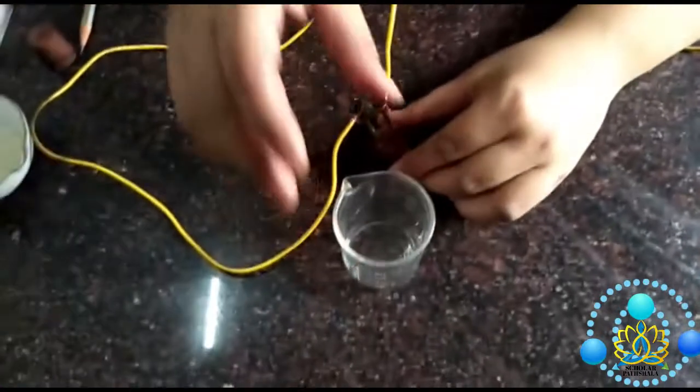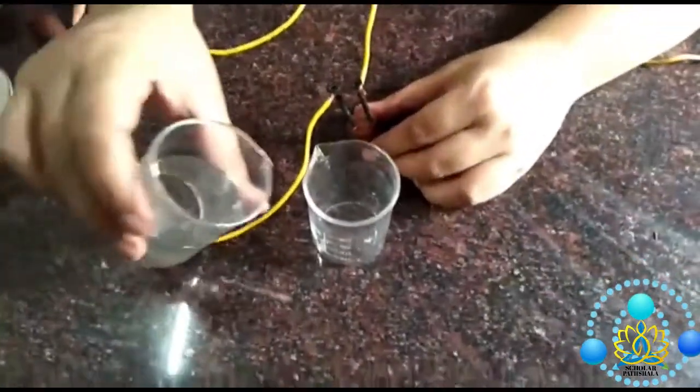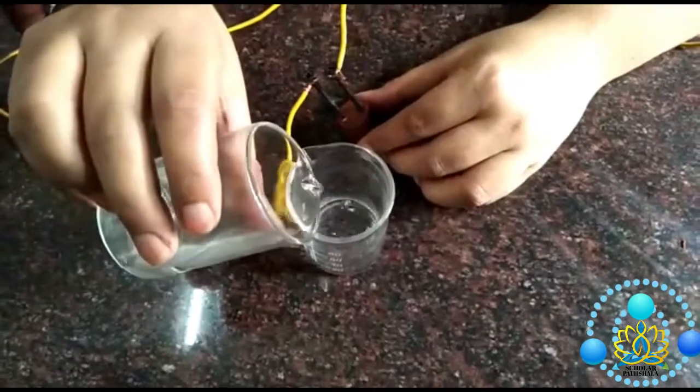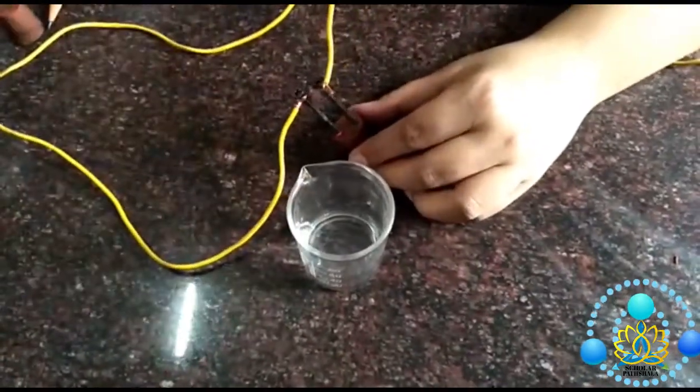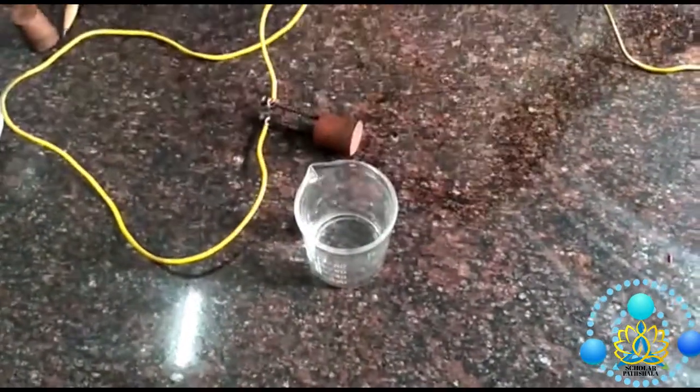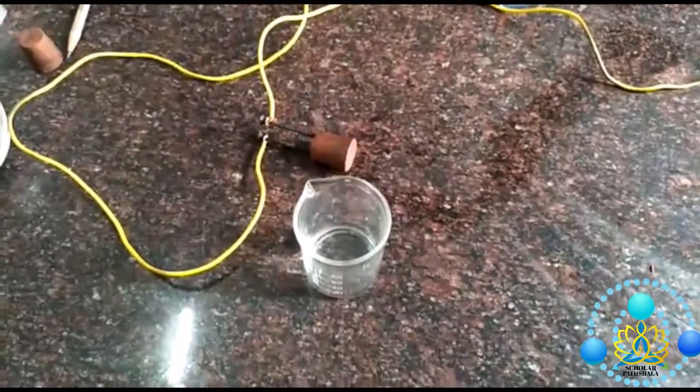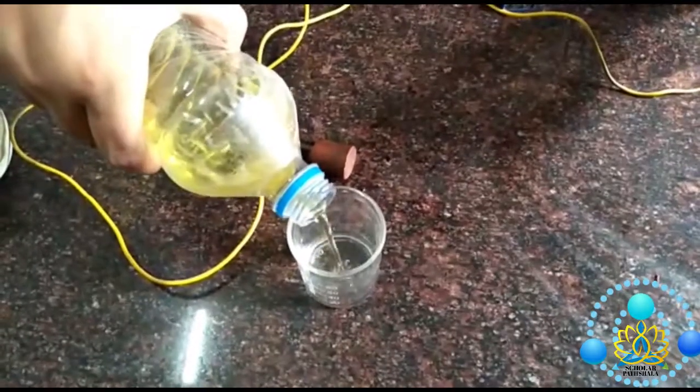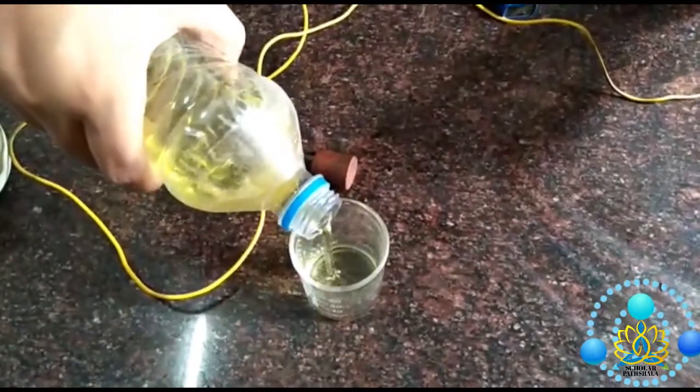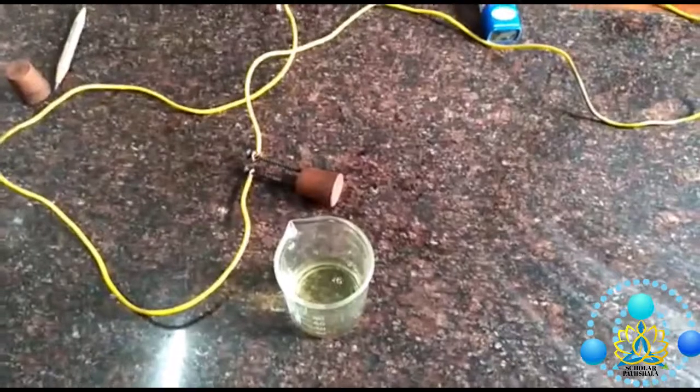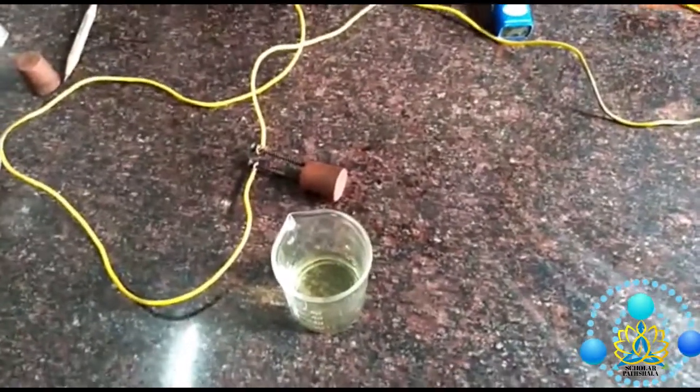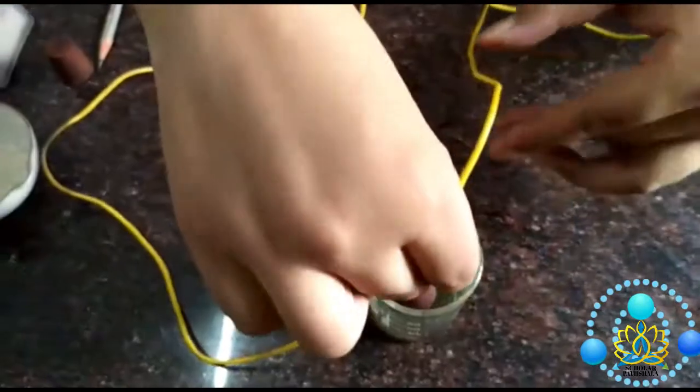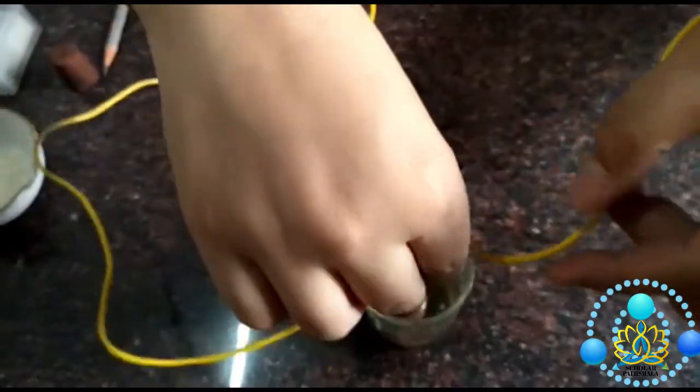Then we have to take a beaker. In that we will put water and then add acid in it. I have HCl. Then put this rubber cork in the acid and dip it properly.